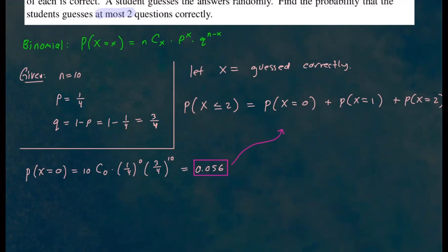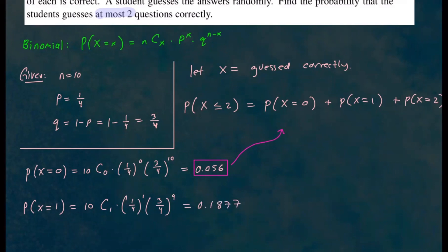For probability that the student guessed one question correctly: 10 choose 1, times one fourth to the first power, times three fourths to the ninth power. If you put this in your calculator, you get about 0.1877.